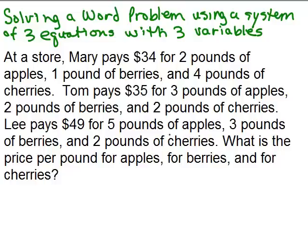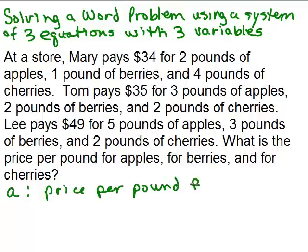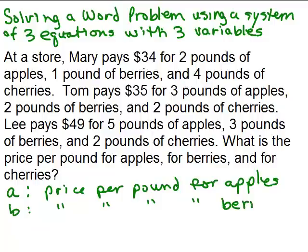What are we looking for? We're looking for the price per pound for each different fruit, so it makes sense to define our variables based on what we're looking for. We're trying to find the price per pound of apples — apples starts with an A, so I'm going to use the variable A to represent the price per pound for apples. We're also looking for the price per pound for the berries, so let B stand for that. And we're looking for the price per pound of cherries — let that be C.